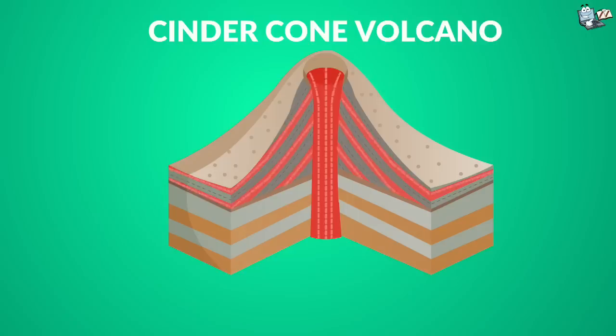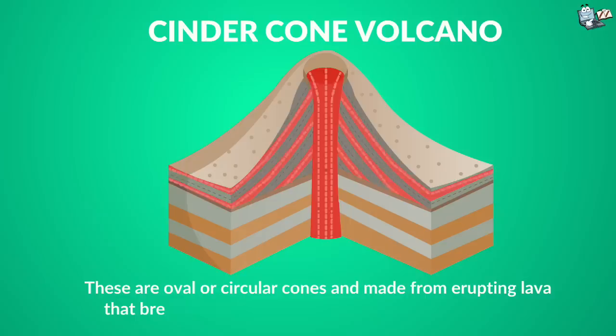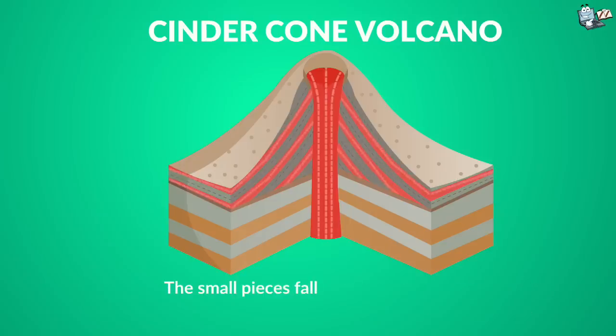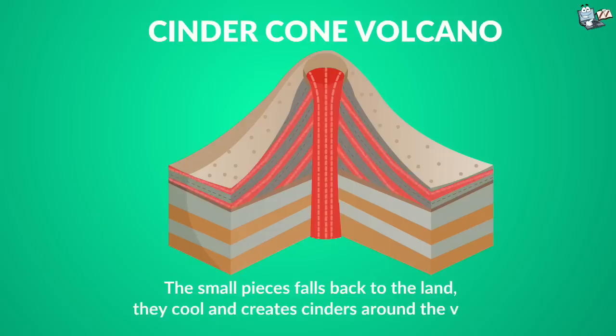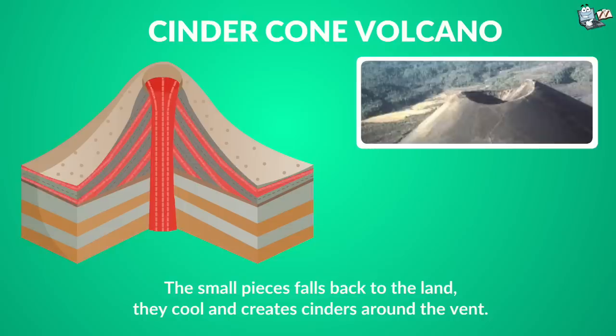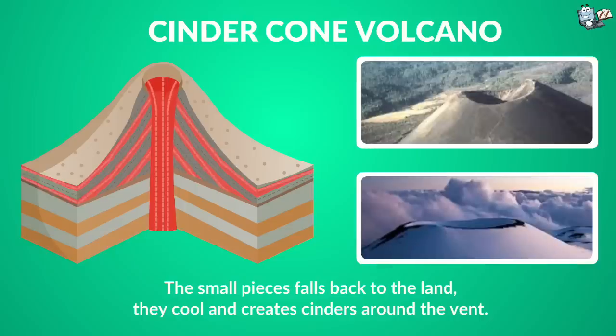Cinder cones. These are ovular or circular cones and made from erupting lava that breaks into small pieces when it shoots in the air. The small pieces fall back to the land. They cool and create cinders around the vent. An example is Paracutan in Mexico and the Mauna Kea in Hawaii.